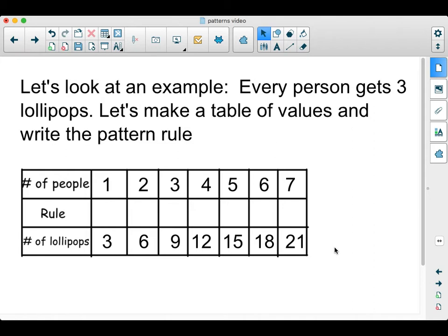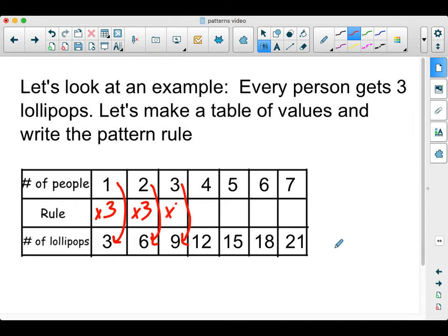So our rule that we're trying to figure out is how can we figure out, if we know the number of people, how many total lollipops we would have. And this pattern rule has to be the same for the entire pattern. So what this one would be is if it's three per person, all you'd have to do is take the number of people and multiply it by three for every one of these. That is my pattern rule.